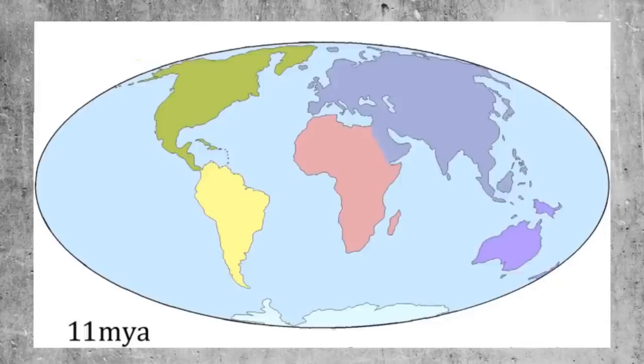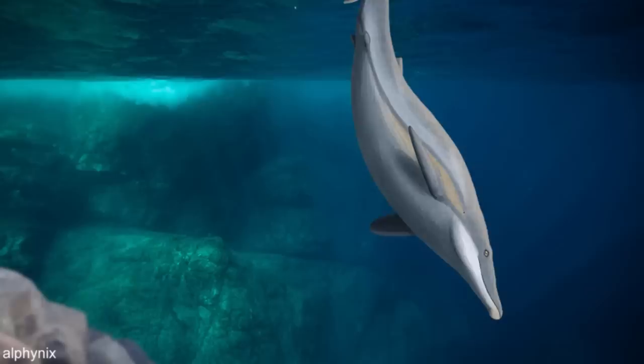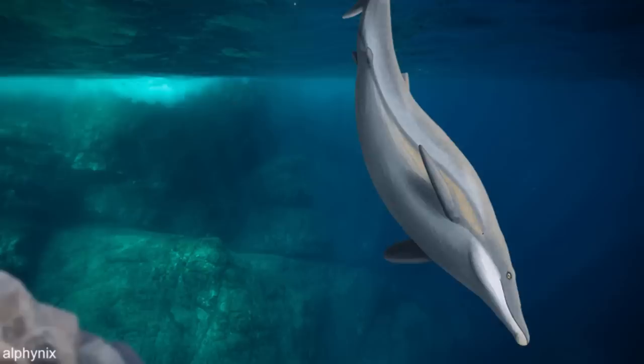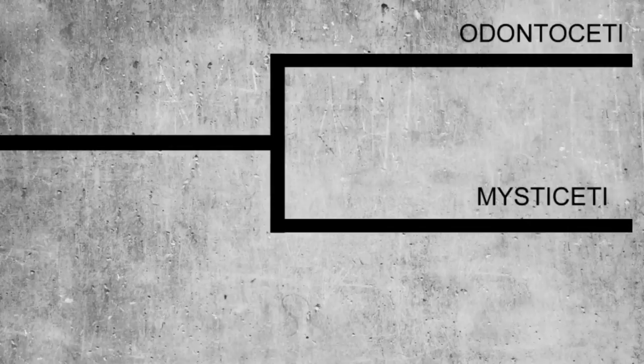Certain seaways were closing and others were widening. Specifically, Antarctica was moving away from South America, so currents were able to better circulate around Antarctica, cooling the oceans. It seemed the archaic whales, like basilosaurids, were not well suited for this new world, but newer whales, called Neocetes, were. These new whales evolved from basilosaurids and are thought to have come from a smaller family within this group called Dorodontinae. When the numbers of basilosaurids were dwindling, the Neocetes split into two groups that define modern whale species to this day: Odontoceti and Mysticeti.